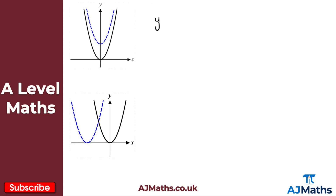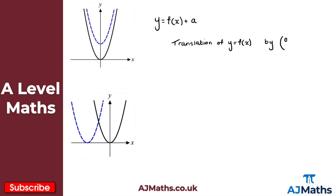Starting with y equals f(x) + a — this is a translation of the graph y equals f(x) by the vector (0, a). So if the new curve has moved up, like this blue one here, we've moved a units up. If the curve was down here, we've moved a units down, represented by the vector (0, -a). This black curve is y = f(x) and this blue curve is y = f(x) + a.